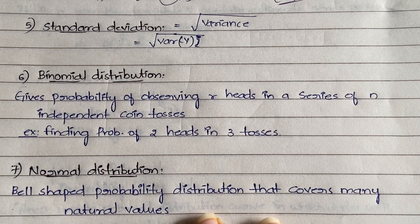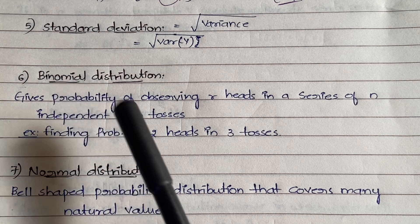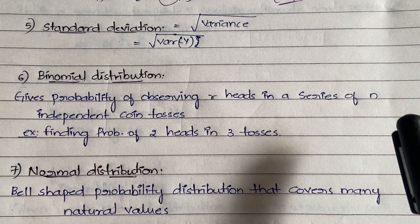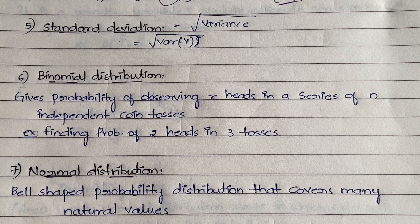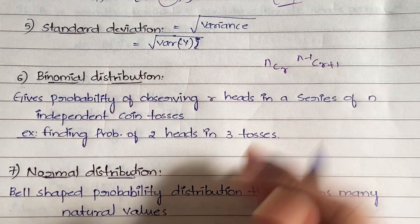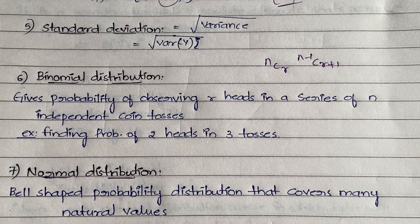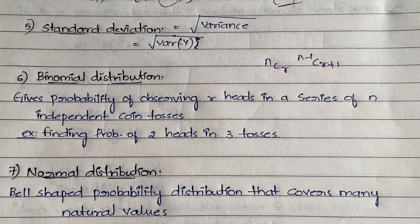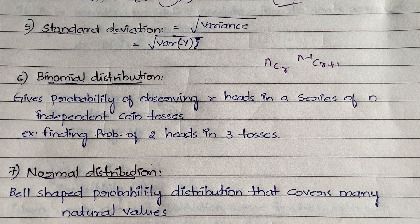The sixth definition is binomial distribution. It gives the probability of observing r hits in a series of n independent coin tosses. For example, if you toss a coin three times, what is the probability of getting two heads? Or out of four tosses, what is the probability of getting three heads? So out of n activities, you find the probability of getting r favorable outcomes.